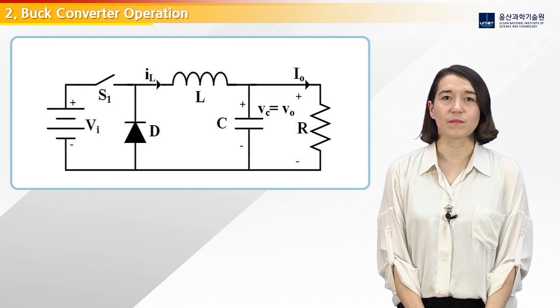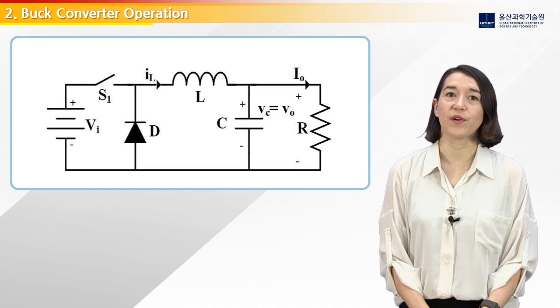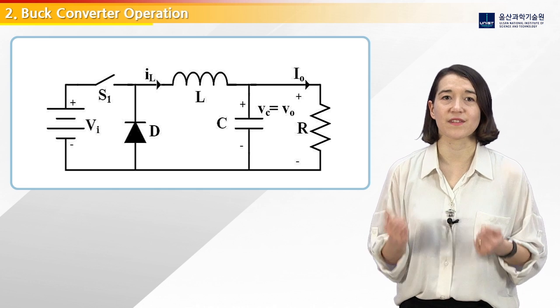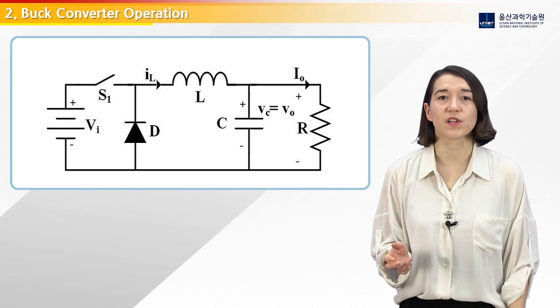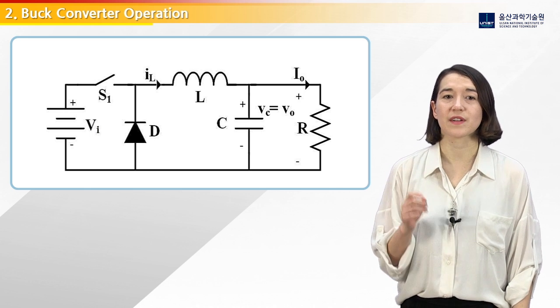To model any system, we first have to understand how it works. Here is a circuit diagram for the buck converter. The buck converter is controlled by the active switch S1.